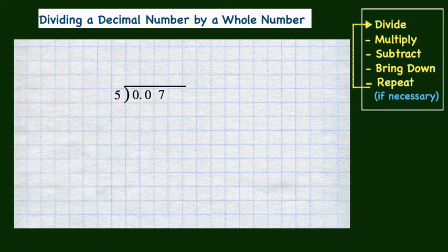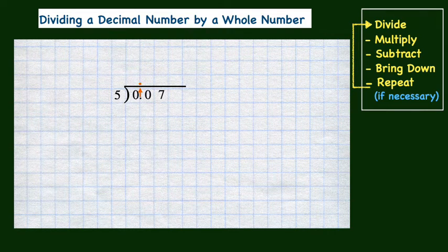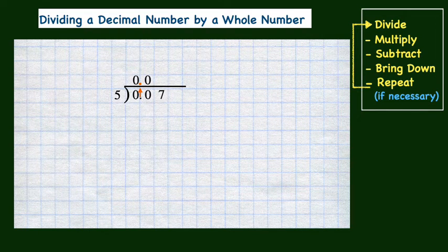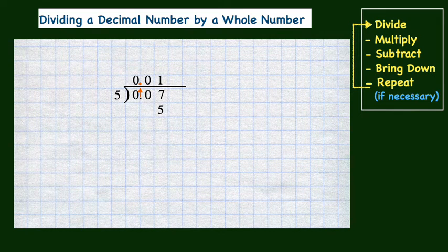Now let's solve this one. The divisor for this division problem is also a whole number, so we start by bringing the decimal point up to the quotient from the dividend first. Now we can divide. Five divides into zero, zero times. So now we need to look at the next digit in the dividend, which is also a zero. Again, five divides into zero, zero times. The next digit is a seven. Five divides into seven one time. One times five is five. Subtracting five from seven, we get two.